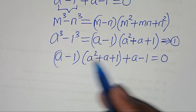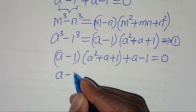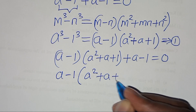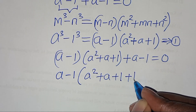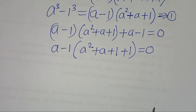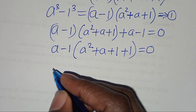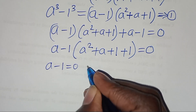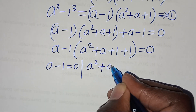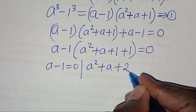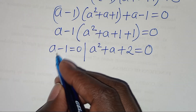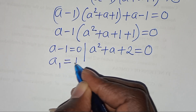So, since we have a factor of a minus 1, we factor it out: a minus 1, times a squared plus a plus 1 plus 1, equals 0. That gives a minus 1, times a squared plus a plus 2, equals 0. This implies the first part is a minus 1 equals 0, and the second part is a squared plus a plus 2 equals 0. So the first value is a₁ equals 1.